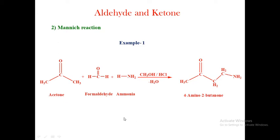Here we can use either aliphatic or aromatic ketones — that is acetone or acetophenone. Those ketones must contain an alpha-hydrogen: acetone contains alpha-hydrogen, and acetophenone also contains alpha-hydrogen. In the first example of the Mannich reaction, acetone is reacted with formaldehyde and ammonia in the presence of methyl alcohol and hydrochloric acid to form 4-amino-2-butanone.